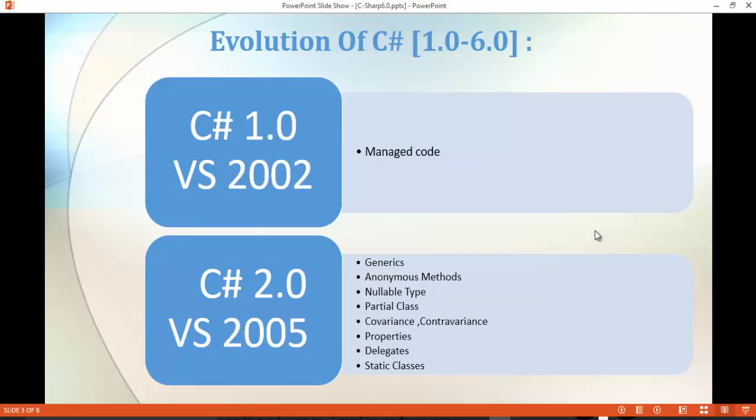Coming to C-Sharp version 2.0, it was released with Visual Studio 2005. You can observe the second version released a bunch of features, and in this bunch, generics was the most important one.